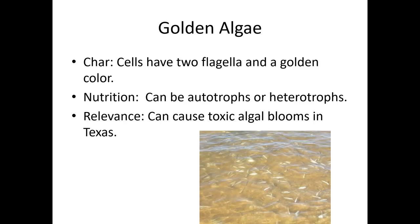Next up, golden algae. This one is problematic in area lakes, and periodically around here there will be fish die-offs that are very often due to golden algae. The difference here is instead of being red like dinoflagellates, these tend to be golden in color. These can be photosynthetic or they can be eaters, but generally speaking around our part of Texas, if there's a fish die-off it's usually because of golden algae — not always, but very often.